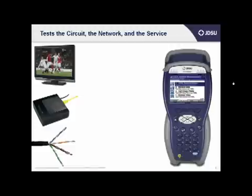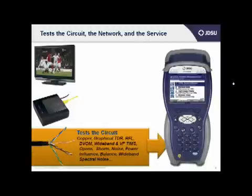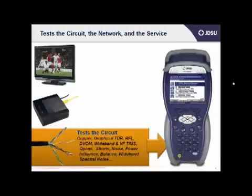The HST tests the circuit. With the HST, you can identify copper impairments and troubleshoot the local loop for faults and conditions that will degrade service, identifying all the usual culprits like shorts, grounds, opens, crosses, bridge taps, wet sections, and other high-resistant faults. You can use it to identify pair imbalance and power influence issues, and you can also troubleshoot wideband impairments up to the VDSL2 range, about 30 MHz, with specific noise filters for VDSL2 up to 30 MHz.